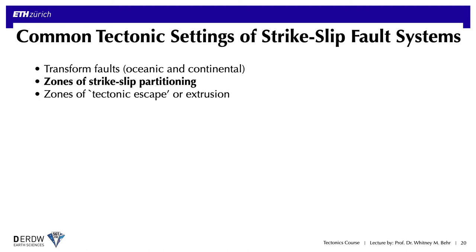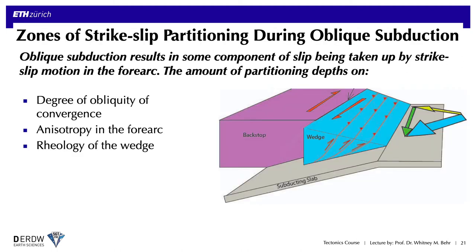Now let's look at strike-slip faults that don't define plate boundaries and therefore are not considered transform faults. It's very common for strike-slip faults to develop in regions of oblique convergence as a means of more efficiently partitioning strain between the strike-parallel and strike-perpendicular components. The amount of partitioning depends on the degree of obliquity of convergence, the degree of anisotropy in the crust including inheritance of older structures, and the rheology of the orogenic wedge relative to the backstop region.